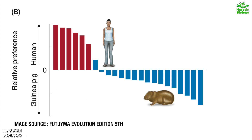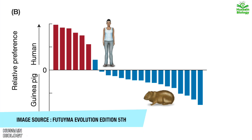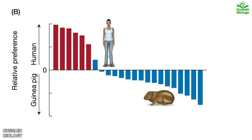The graph shows results from an experiment in which mosquitoes could respond to the odor of either a human or a guinea pig. On the upper side of the graph we have the human relative preference, and on the lower side we have the guinea pig relative preference.